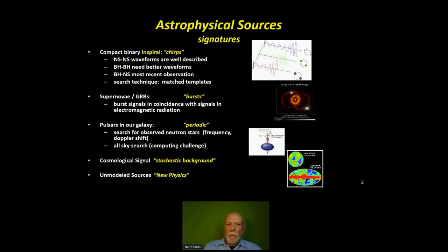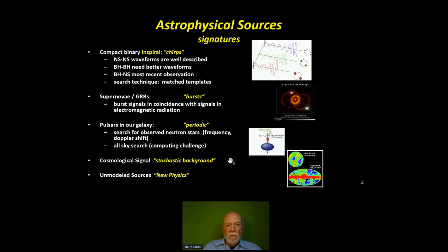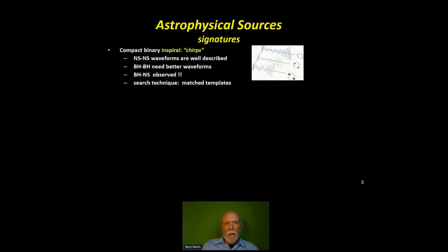We're quite sensitive to pulsars, but it's a computing problem that keeps us from being more sensitive. The main problem is the ones we know a lot about are old and probably more spherically symmetrical, with a smaller gravitational wave signal. Our sensitivity continues to get better for periodic sources. We also look for cosmological signals — that's very difficult at the high frequencies where we are. Lastly, we look for sources like black holes that don't give electromagnetic radiation.